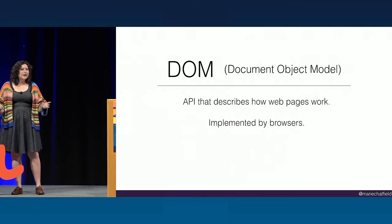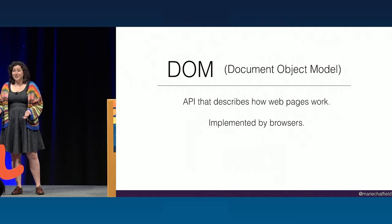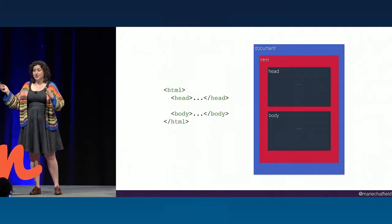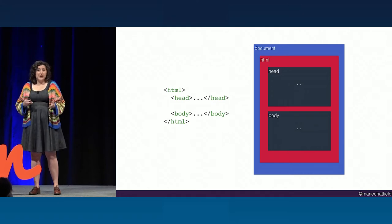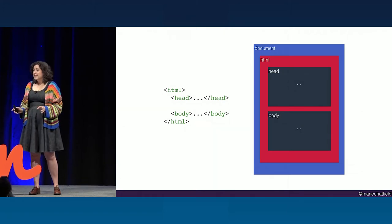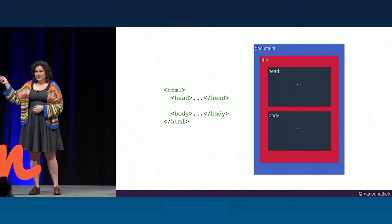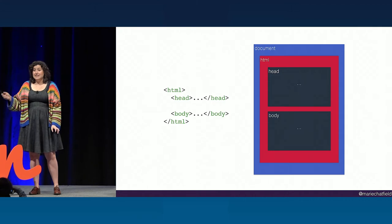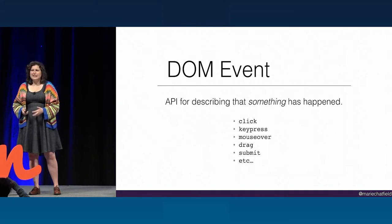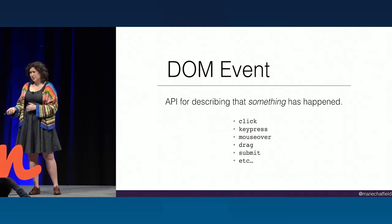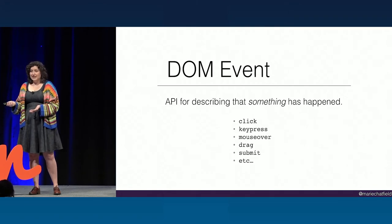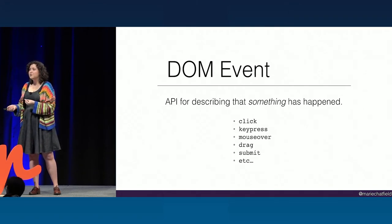So let's back it all the way up. What is the DOM in the first place? It's the Document Object Model — basically the API that describes how web pages work. Browsers implement the DOM spec to turn static HTML into a living web page you can interact with. There's this important data structure called the DOM tree, a hierarchical structure where everything in your web page is represented as a node, starting from the top-level document down to every single div and button. We also have a concept of events in the DOM — an API that describes that something happened on the page, usually a result of user interaction like a click, key press, or touch event.